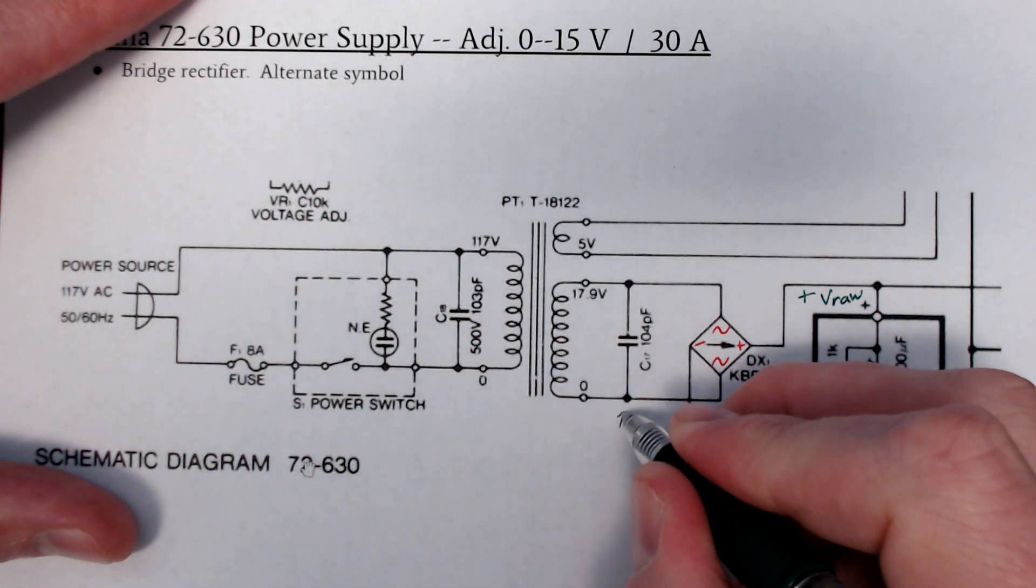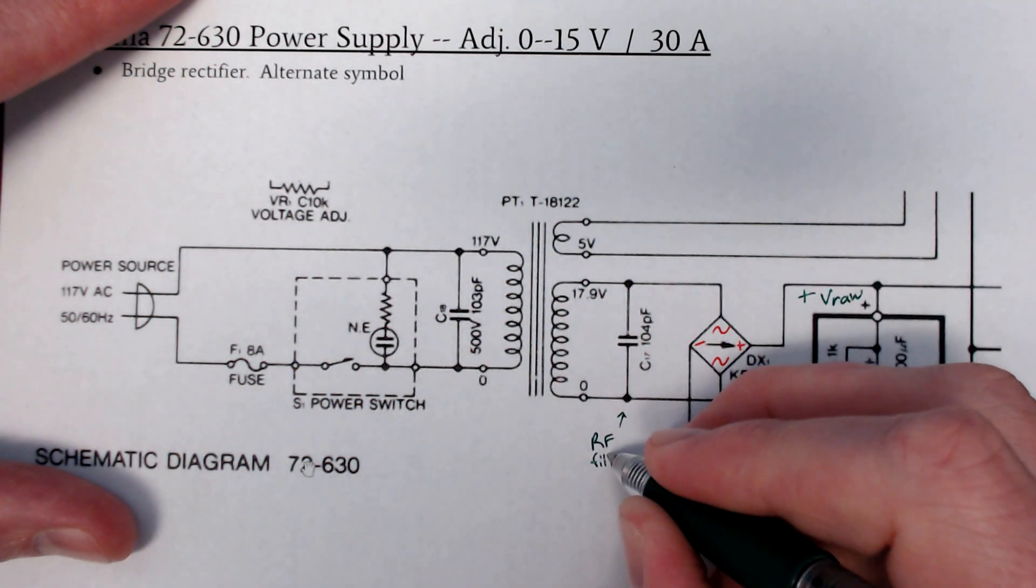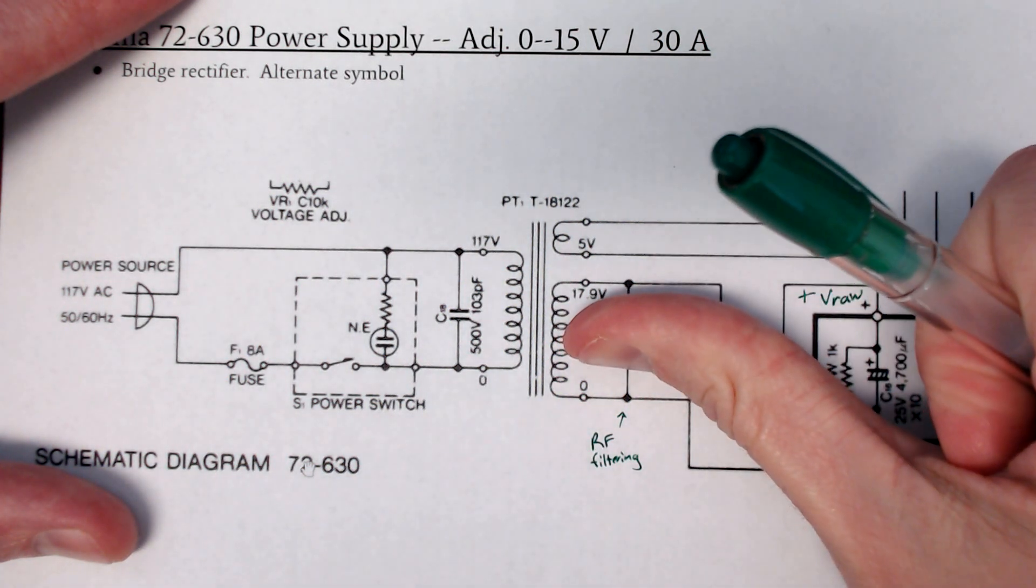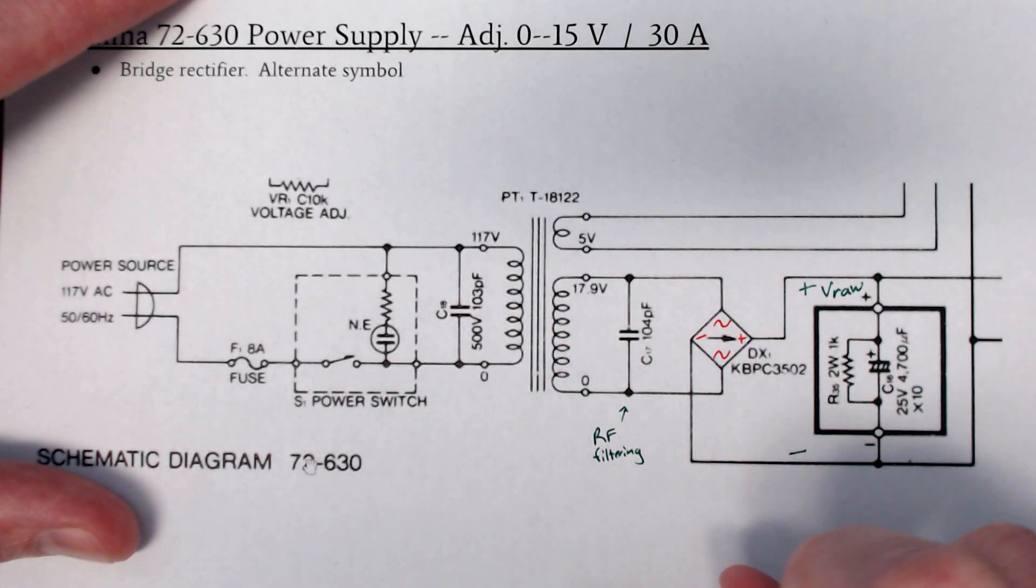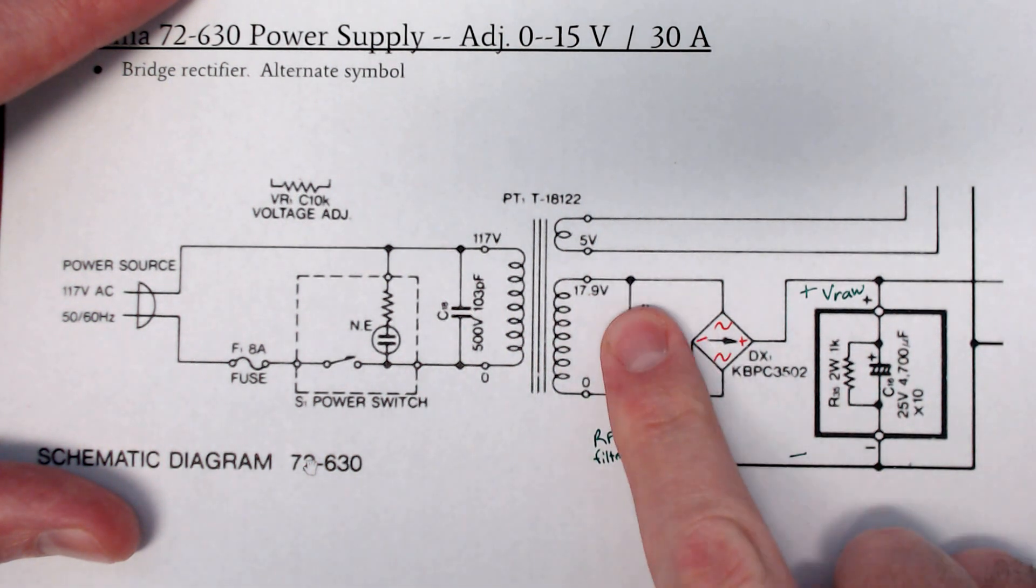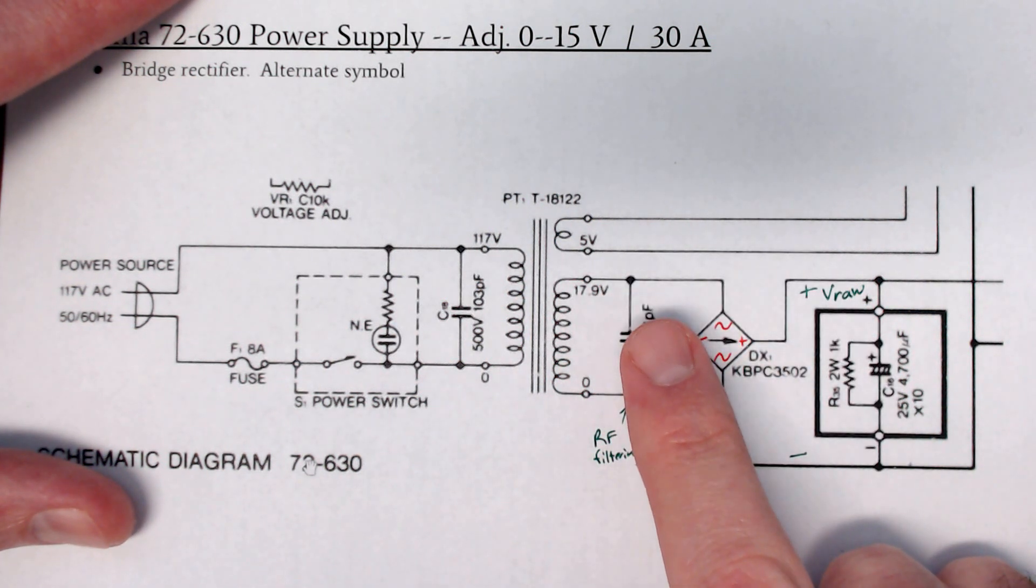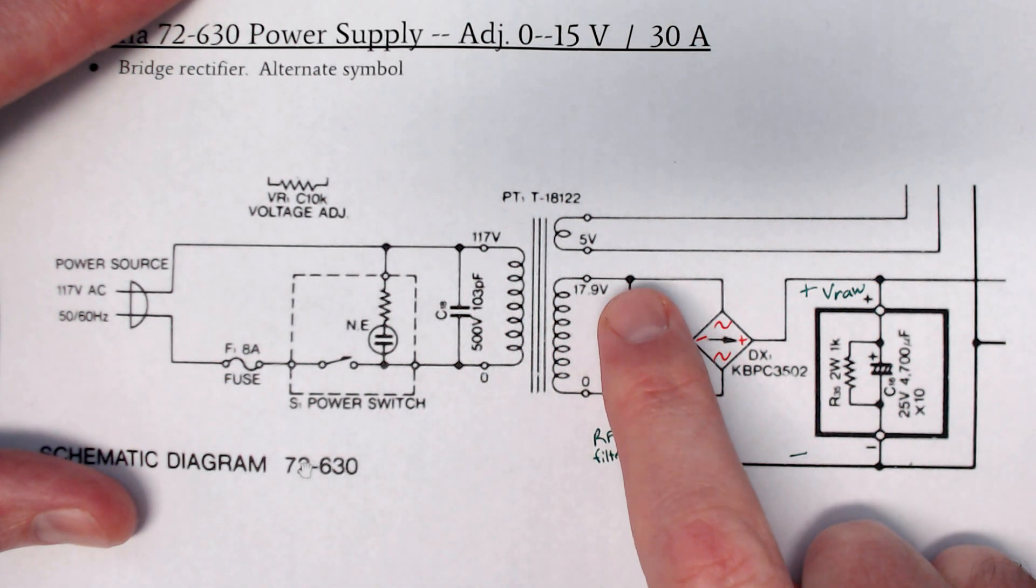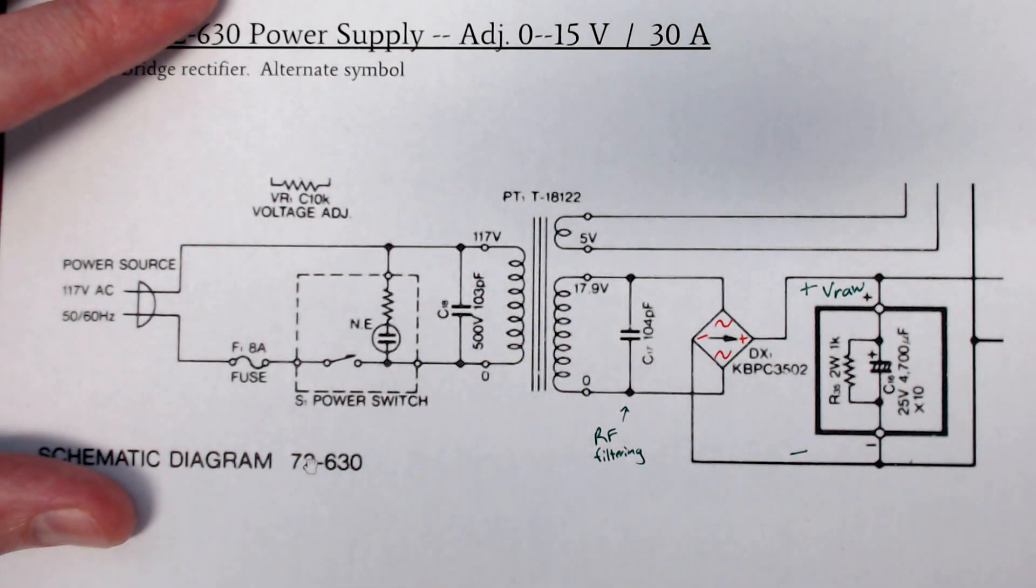This capacitor here, see how it's picofarads. This is for RF filtering and such. We're going to just ignore this as an open circuit for what's going on at 60 Hz. It's there for other reasons, radio frequency related stuff. Sometimes we say a capacitor is a short circuit, but this one is so small and the frequency that we're dealing with is so small that the impedance of this capacitor is very large at 60 Hz or so. So open circuit for that. Just ignore it.